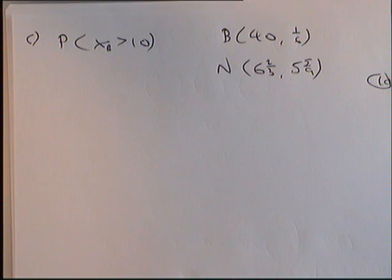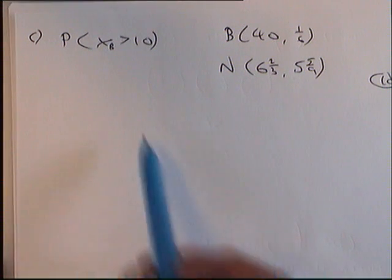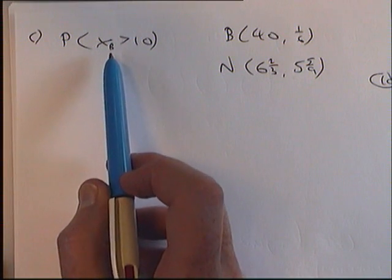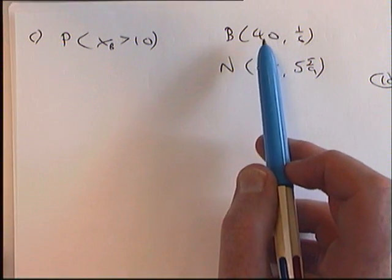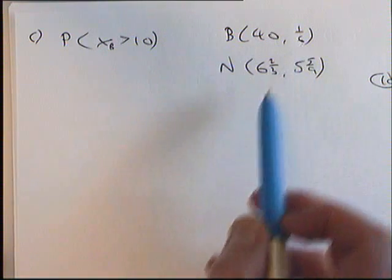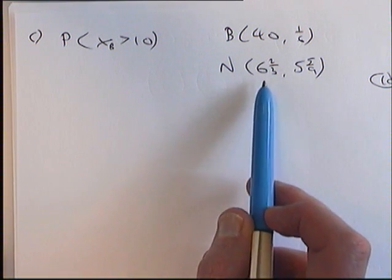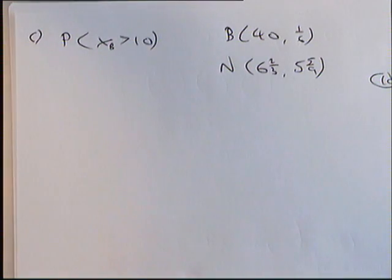Part C of this question was: find the probability that you get more than 10 sixes. I've just written down the question here. Under the binomial, we want X to be greater than 10. The binomial was N=40, P=1/6. We've said it's approximated by the normal distribution with mean 6 and 2 thirds and variance 5 and 5 ninths. That was in the previous clip.